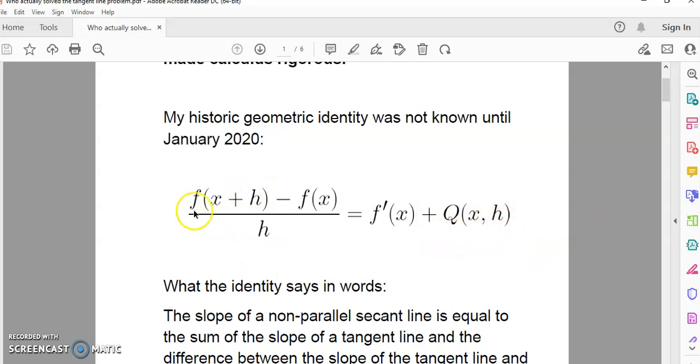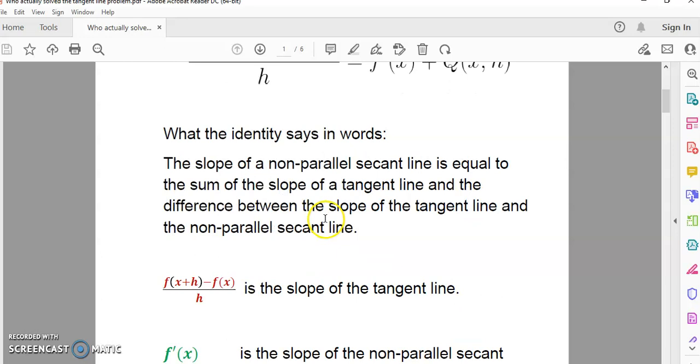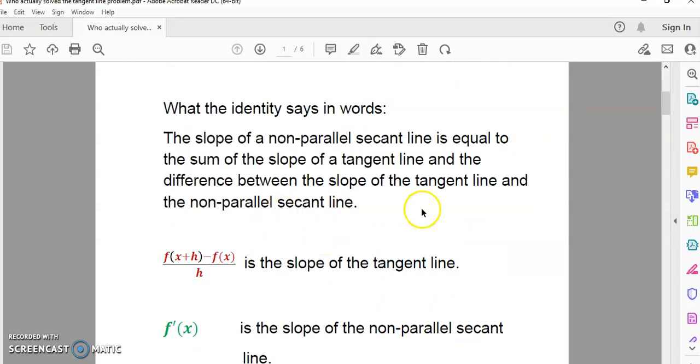This one identity, which is inspired by the new calculus, actually fixes the mainstream formulation because both the derivative and the definite integral can be formulated in terms of this very same definition. What the identity says in words is that the slope of a non-parallel secant line is equal to the sum of the slopes of a tangent line and the difference between the slopes of the tangent line and the non-parallel secant line.